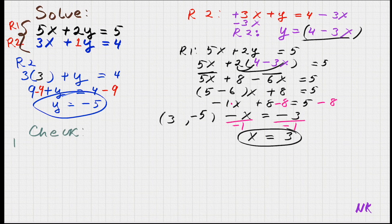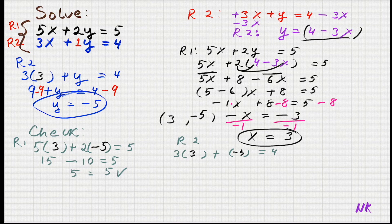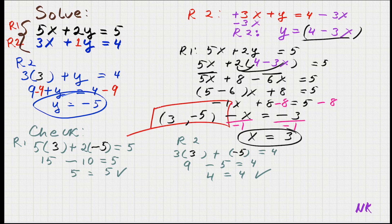Let's check. In row 1, 5x plus 2y equals 5: with x equals 3 and y equals negative 5, we have 5 times 3 equals 15, and 2 times negative 5 equals negative 10. So 15 minus 10 equals 5 — true. In row 2, 3x plus y equals 4: 3 times 3 is 9, and 9 plus negative 5 equals 4 — 4 equals 4, true. So (3, -5) is our solution.